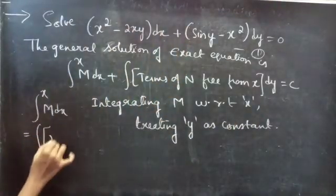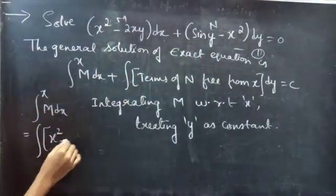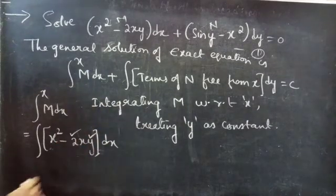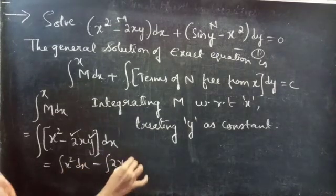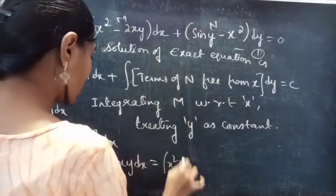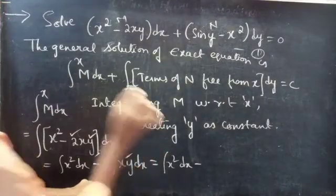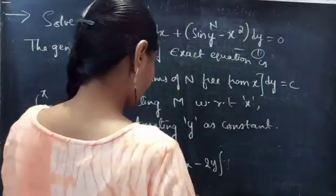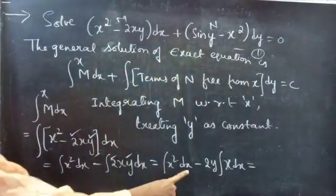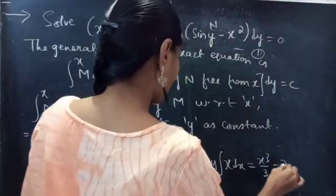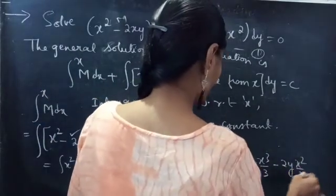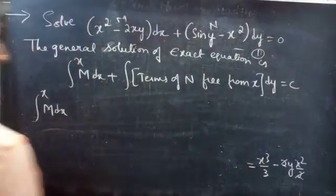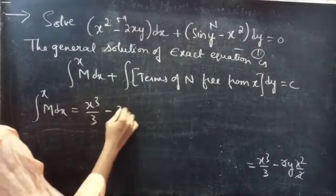The first integral is the integral of M, where M equals x squared minus 2xy, with respect to dx, treating y as constant. This equals the integral of x squared dx minus the integral of 2xy dx. Writing the constants 2 and y outside the integral gives x cubed over 3 minus 2y times the integral of x dx, which equals x cubed over 3 minus 2y times x squared over 2. The 2 cancels, giving us x cubed over 3 minus x squared y.